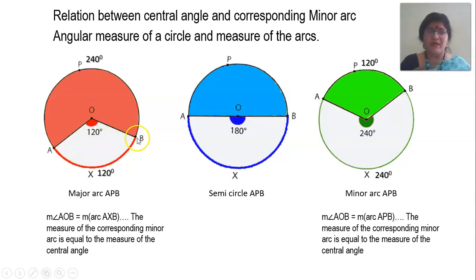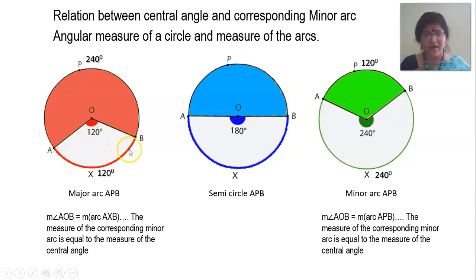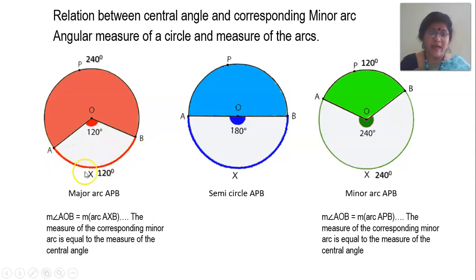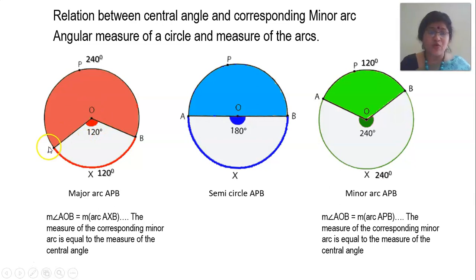Angle AOB is an angle subtended by arc AXB. Angle AOB is the central angle. Whatever is the measure of the central angle, the same is the measure of the corresponding minor arc. So in this case, the central angle is 120 degrees, so the corresponding minor arc AXB is also 120 degrees. Arc AXB plus arc APB gives the angular measure of the complete circle, which is 360 degrees. So if arc AXB is 120 degrees, the major arc APB will be 360 minus 120, that is 240 degrees.